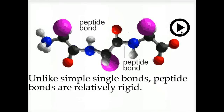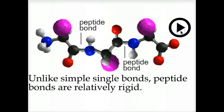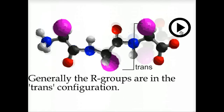Unlike simple single bonds, peptide bonds are relatively rigid — they act a little bit like bonds and a half. Generally, R groups are in the trans configuration, that is on the opposite sides of the peptide bond.